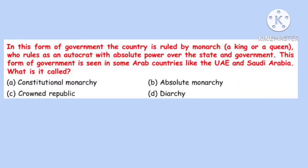Question 17. In this form of government, the country is ruled by a monarch who rules as an autocrat with absolute power over the state and government. This form of government is seen in Arab countries like the UAE and Saudi Arabia. What is it called? Correct option is B: Absolute Monarchy.